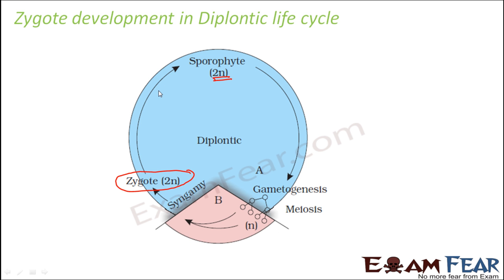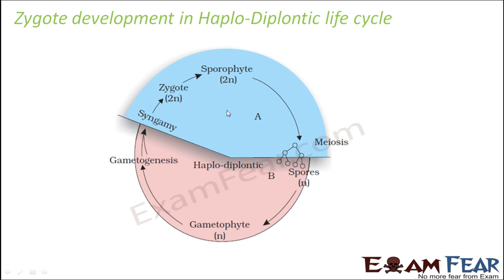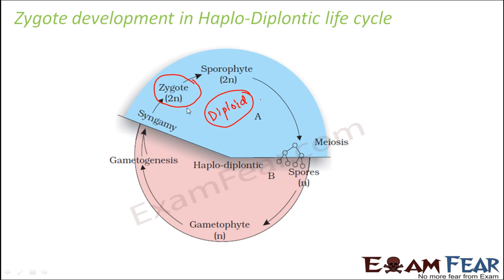In a haplodiplontic life cycle, half of the time it is in the haploid phase and the remaining half in the diploid phase. Here again, the zygote does not undergo meiosis — it forms the sporophyte, which in turn undergoes meiosis. The zygote development phase is the diploid phase. In both haplodiplontic and diplontic life cycles, zygote development happens in a similar way. So the zygote either undergoes meiosis to form haploid spores which later form individuals, or it directly forms the sporophyte which in turn undergoes meiosis to form spores.